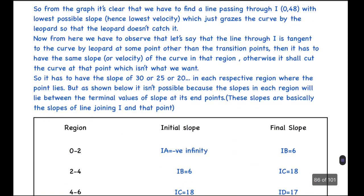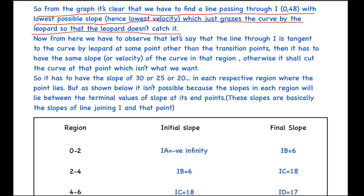So what can we conclude from here? From the graph, it's clear that we have to find the line passing through I, which is the initial position of the deer at (0,48), with the lowest possible slope, hence lowest velocity, which just grazes the curve by the leopard so that the leopard doesn't catch it.